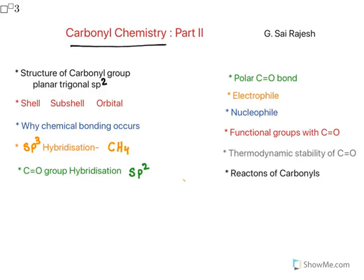Hello everyone, welcome to the class on carbonyl chemistry part 2. In part 1, I discussed the structure of the carbonyl group. I explained that the carbonyl group is sp2 hybridized and is a trigonal planar molecule.